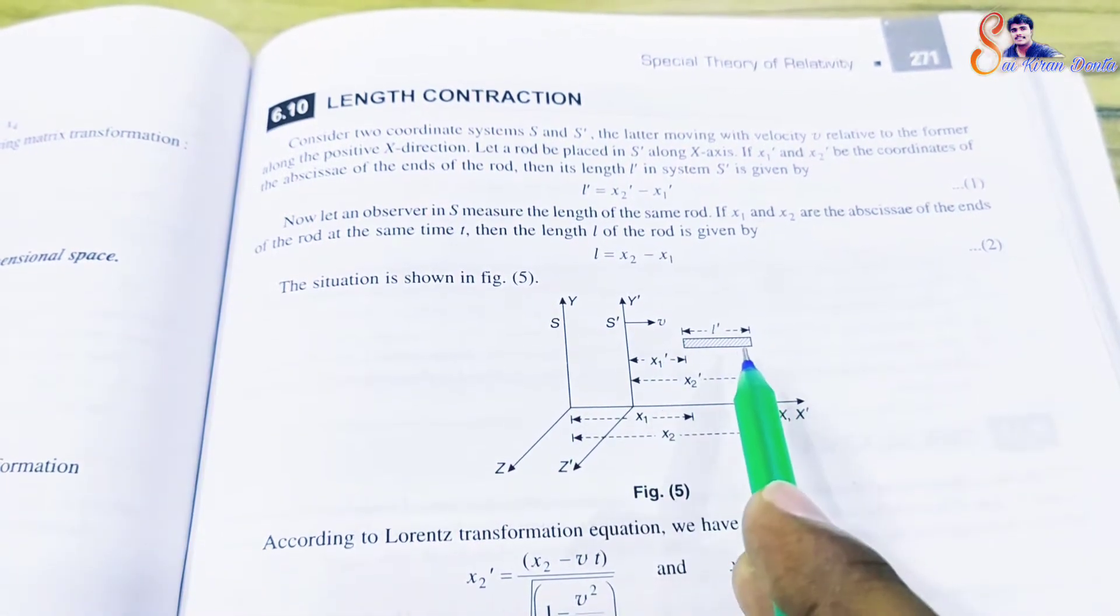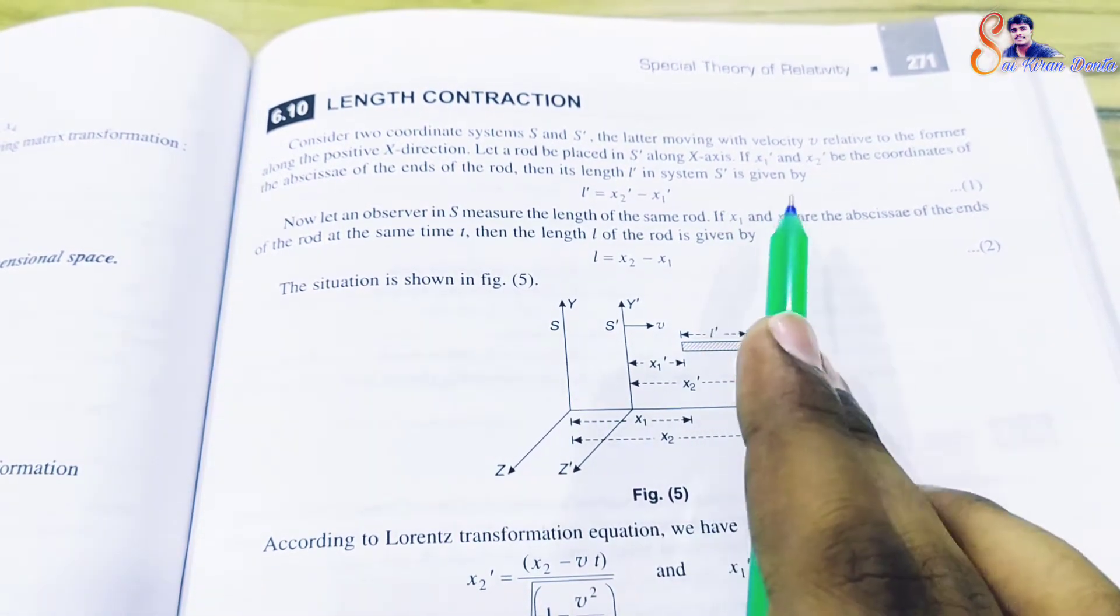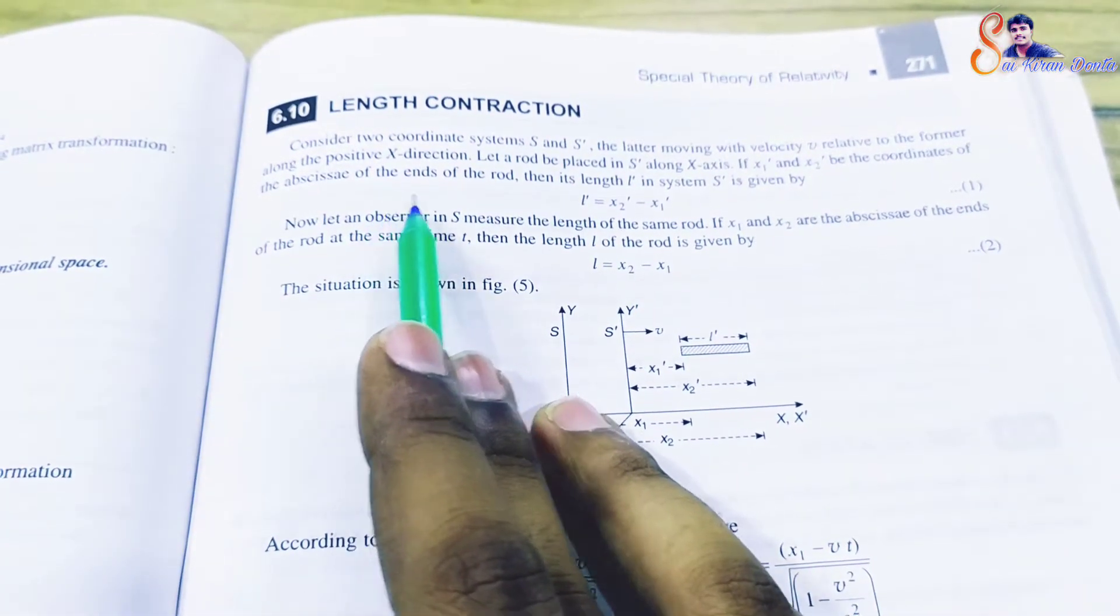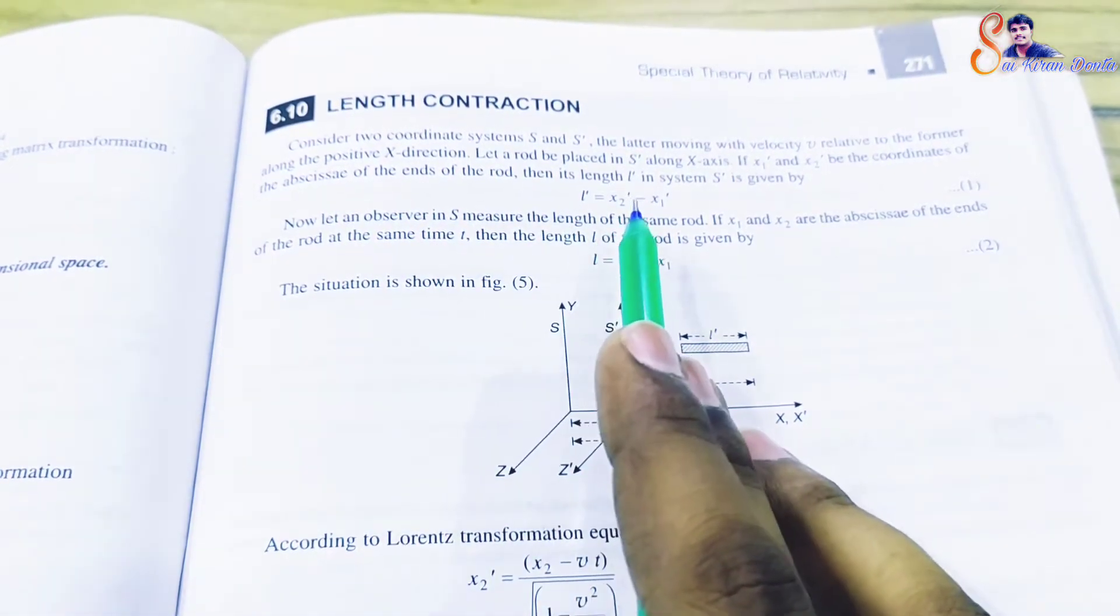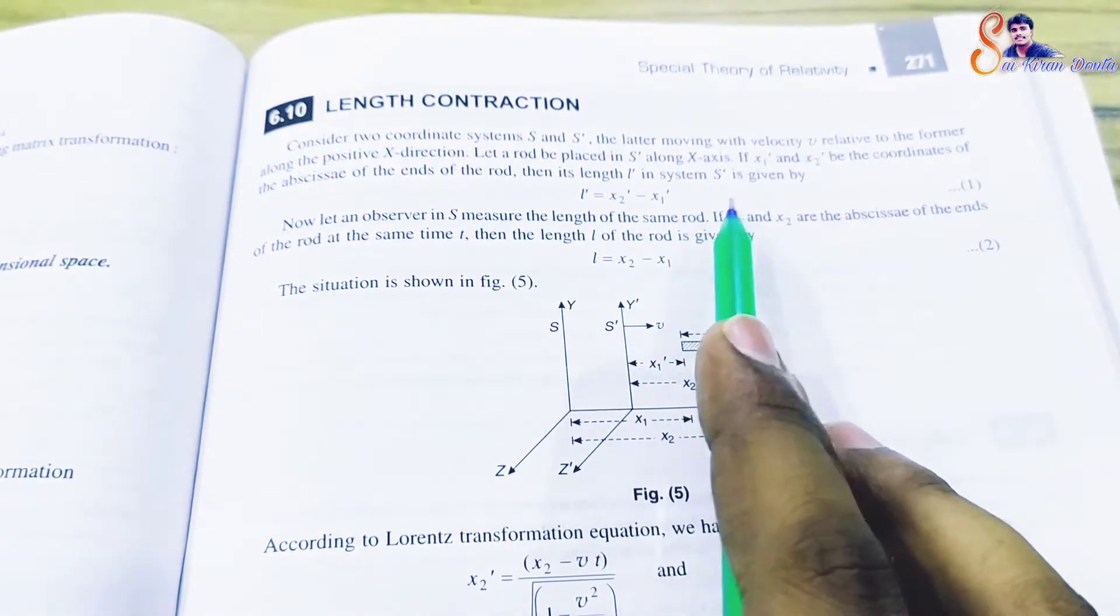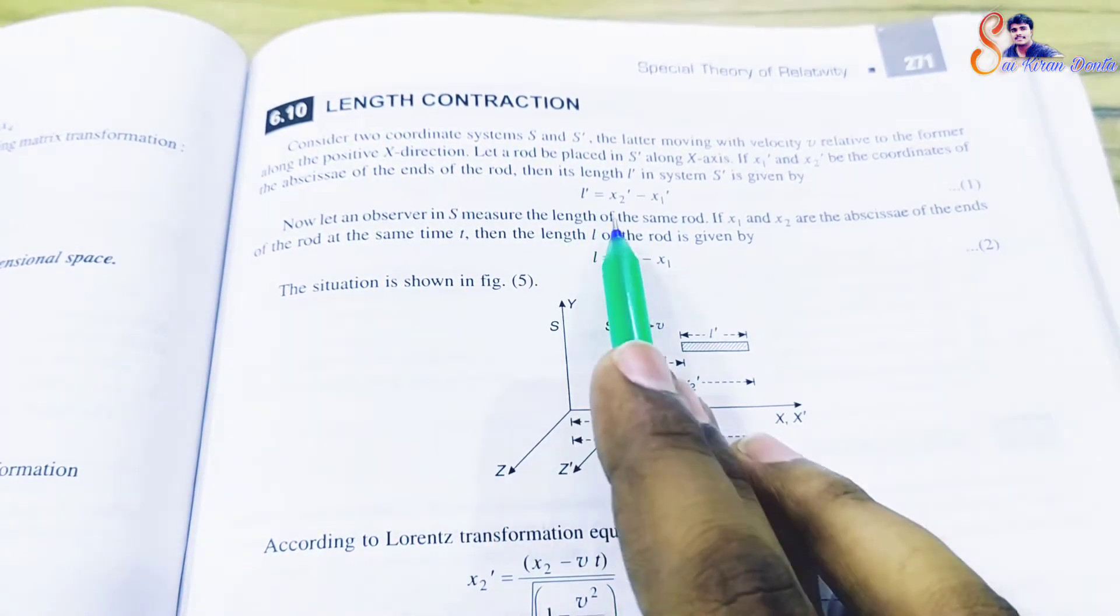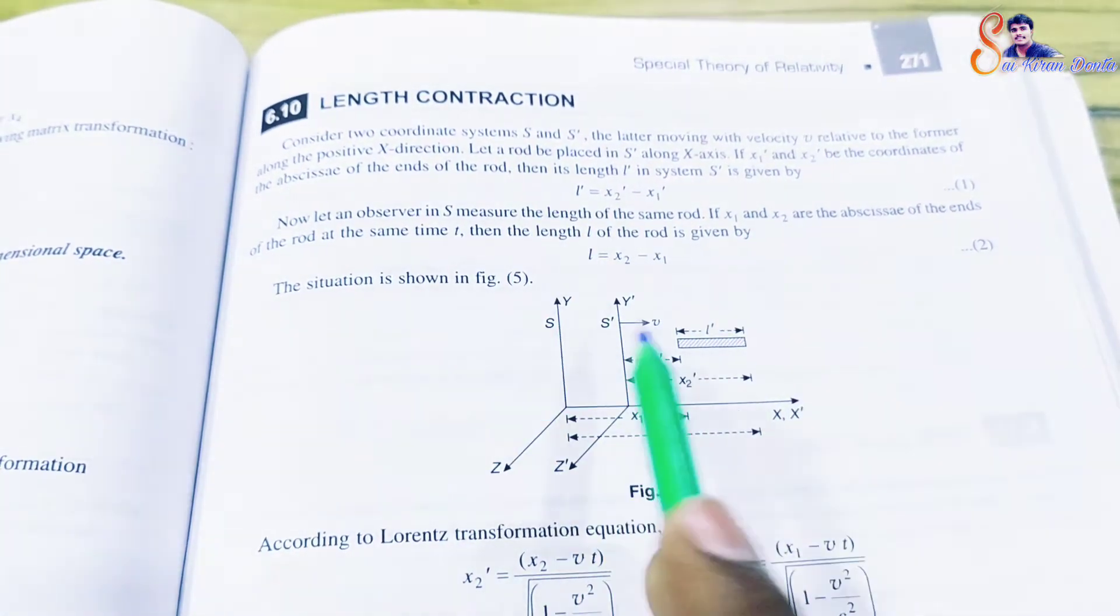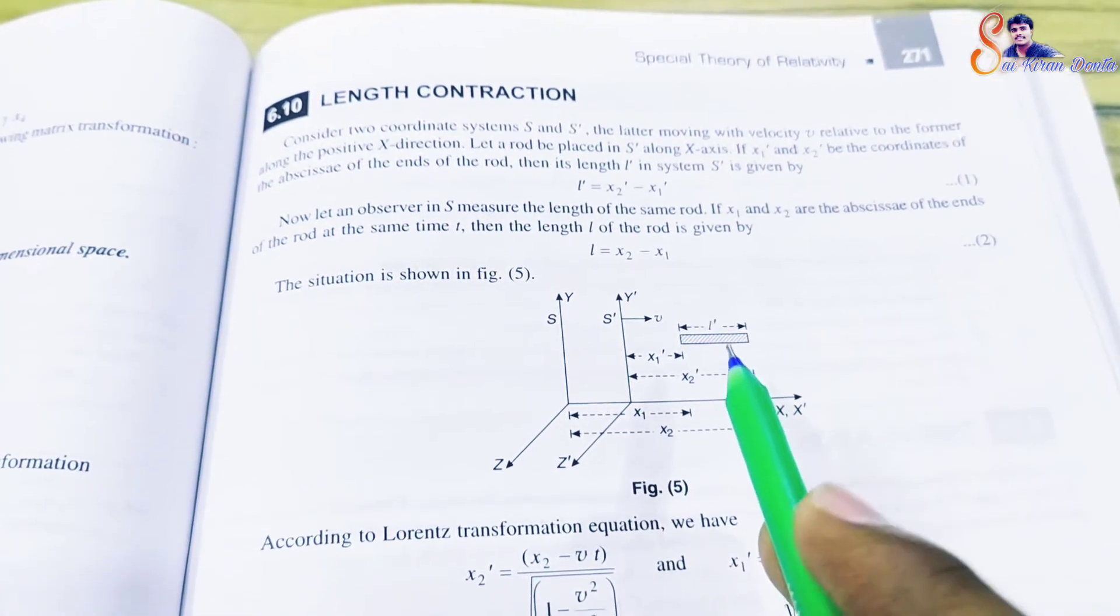Let a rod be placed in S dash along the x axis. If x1 dash and x2 dash are the coordinates of the ends of the rod, then its length l dash in the system S dash is given by l dash equals x2 dash minus x1 dash.